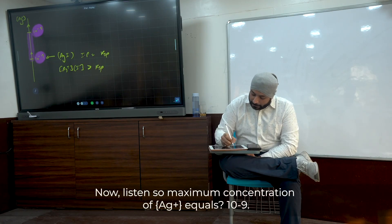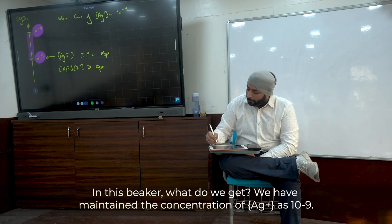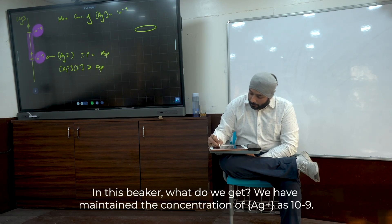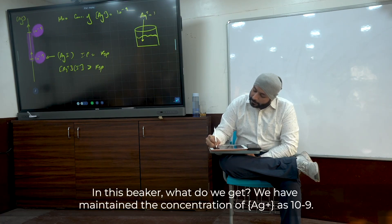So, the maximum concentration of Ag⁺ we should maintain is 10⁻¹⁹, so that only I⁻ precipitates and Cl⁻ remains in solution.